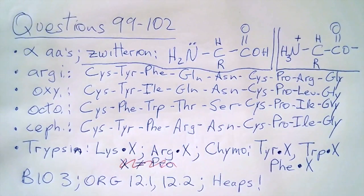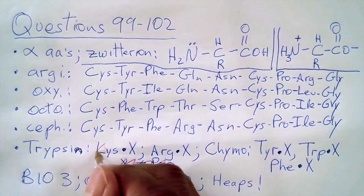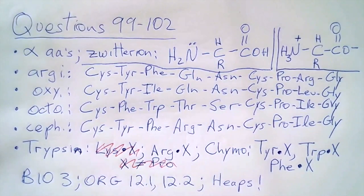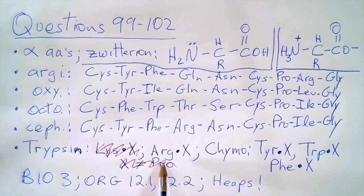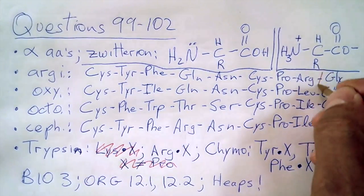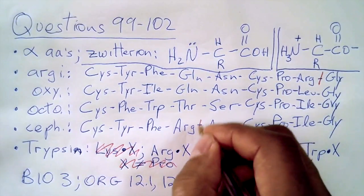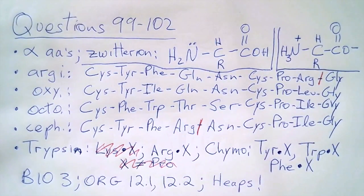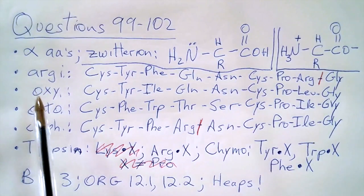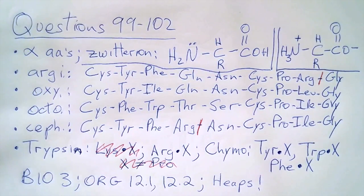Question 99: Cleavage of which of the four is facilitated by trypsin? Well, I've already said that I can't find lysine anywhere, so we don't have to worry about that. And we've seen arginine in two locations - here, this is where it will break, and here. Arginine is not found anywhere else, and so argipressin and cephalotocin will be affected by trypsin, but not oxytocin or octopressin. So the answer for 99 must be B.